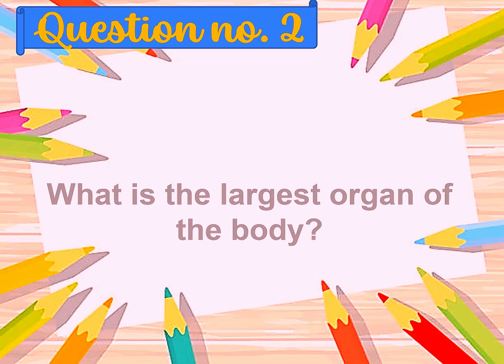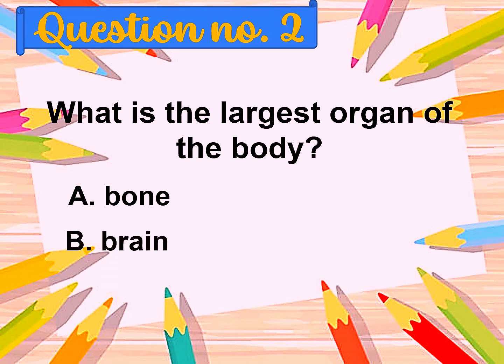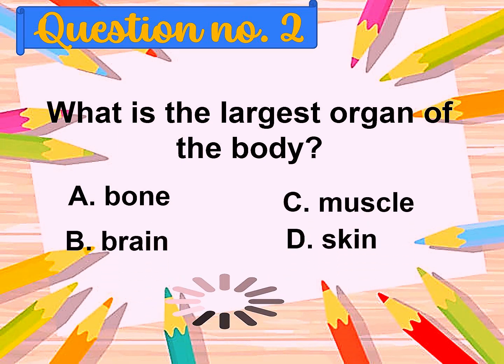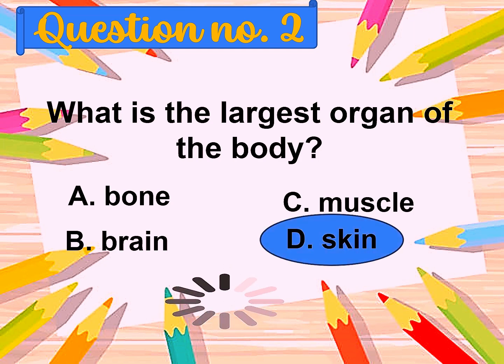Question number two: What is the largest organ of the body? A. Bone, B. Brain, C. Muscle, D. Skin. The correct answer is skin.